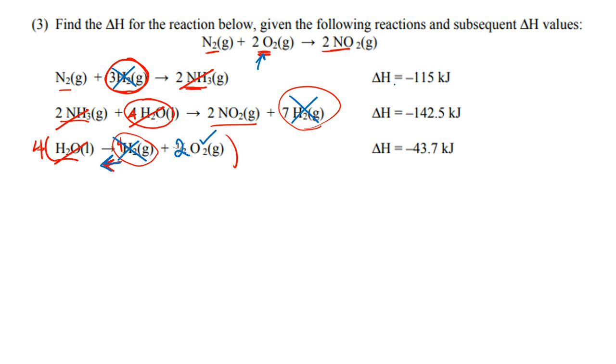I'm going to keep this guy, I'm going to keep this guy. This one, I need to change the sign because I did reverse it, and I also need to multiply by four. Add all those up. We're going to do negative 115 and negative 142.5. Four times positive 43.7, which is equal to a positive 174.8. It's going to give us a grand total of negative 82.7 kilojoules.